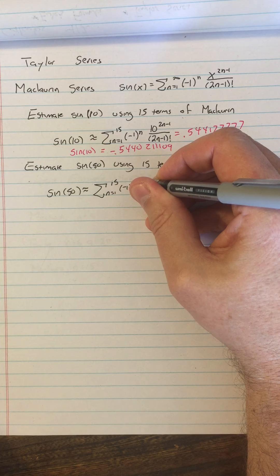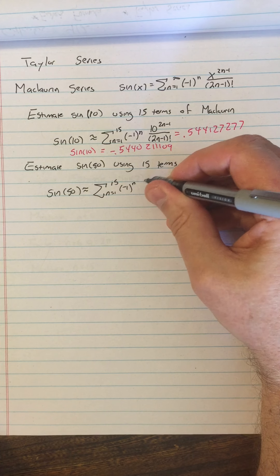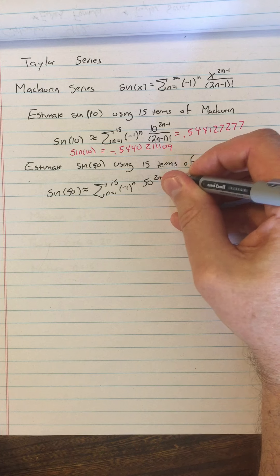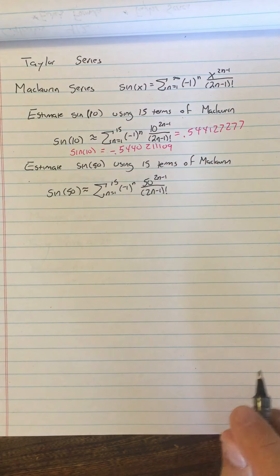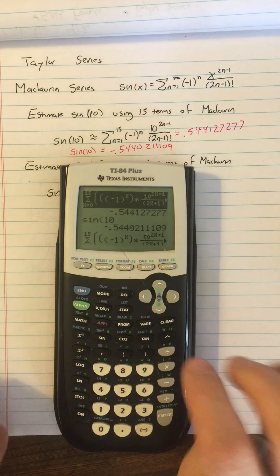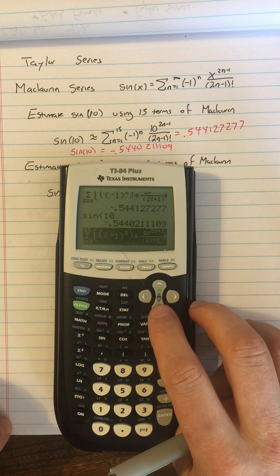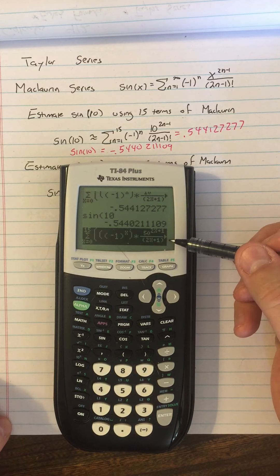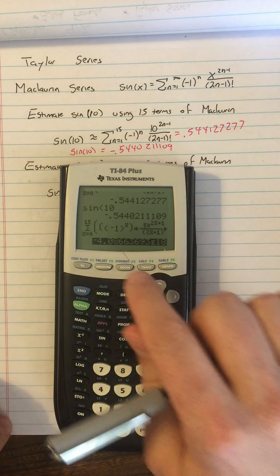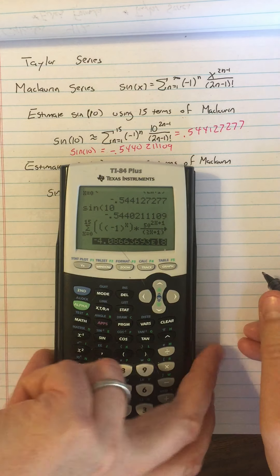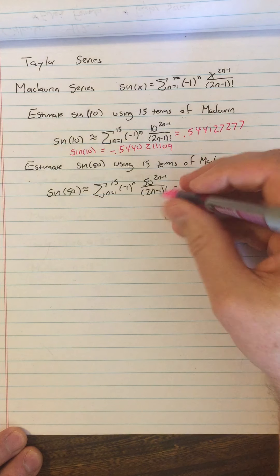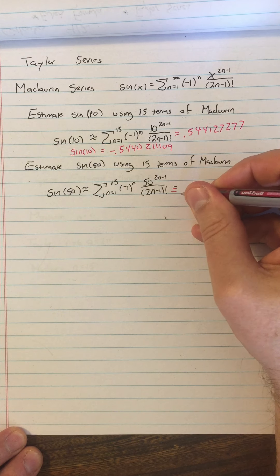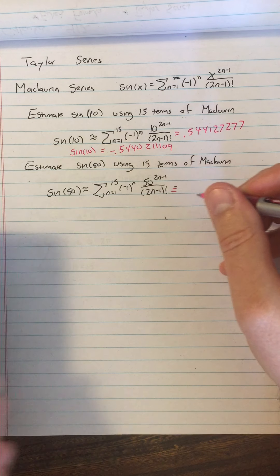So we're going to do negative 1 to the n. This time we're going to do 50 to the 2n minus 1 over 2n minus 1 factorial, and this should tell us what the sine of 50 is. We did that quite a while ago, and here's what it was, here's the summation, and what we got was negative 4.086. So we got, oh, that's interesting, I didn't even notice that before.